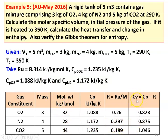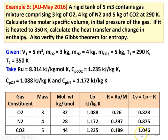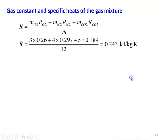We calculate the specific heat at constant volume for each gas using CV = CP − R. CV_O2 = 1.088 − 0.26 = 0.828; CV_N2 = 1.172 − 0.297 = 0.875; CV_CO2 = 1.235 − 0.189 = 1.046 kJ/kg·K.